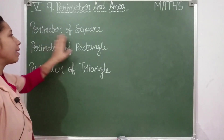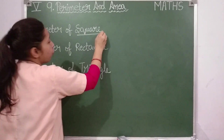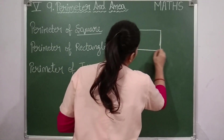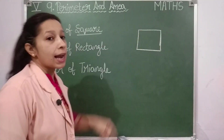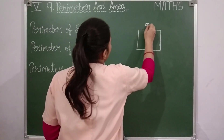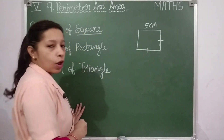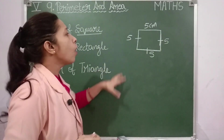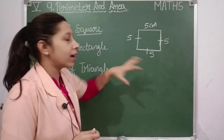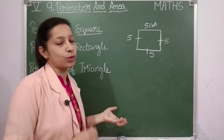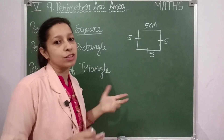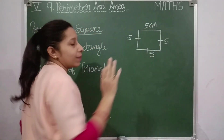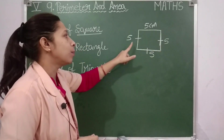Now let us talk about the perimeter of a square. A square is a four-sided closed figure. The property of a square is that all four sides are of the same measurement — equal length. Suppose each side is five centimeters. To find the total distance covered by this figure, we add all its sides: five plus five plus five plus five equals twenty centimeters. That is side plus side plus side plus side.